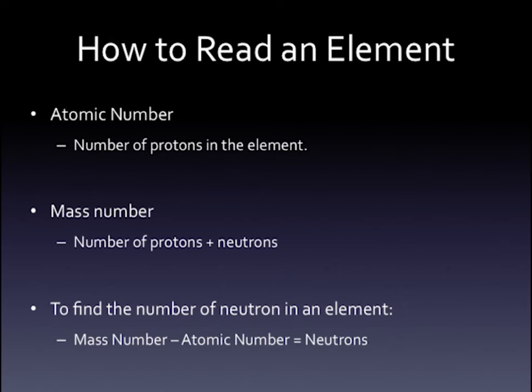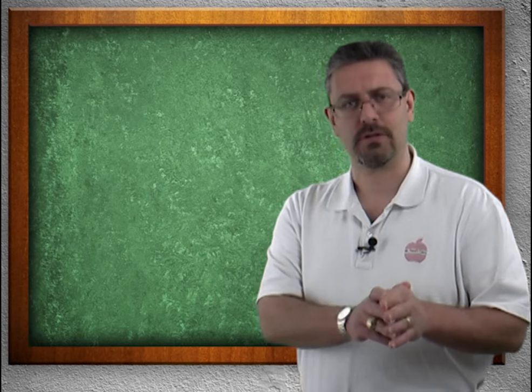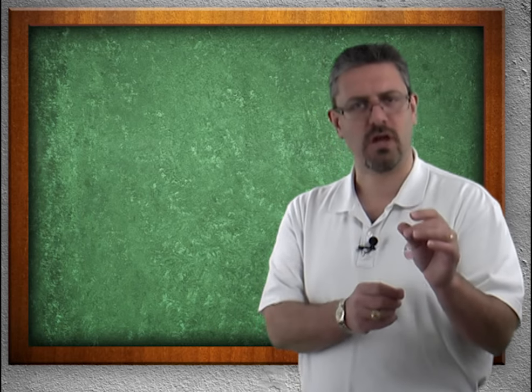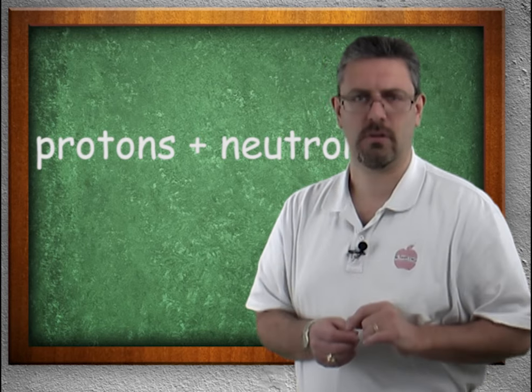We have the mass number. The mass number is simple addition. Mass number is your number of protons plus your number of neutrons equals your mass number.